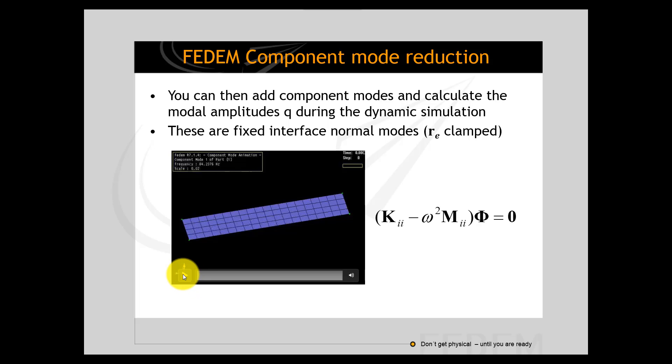But then you can ask FEDEM to calculate a given number of component modes, fixed interface normal modes, and here we can see the first one. You see that the mode shape represents clamped corner nodes or triads and that's why it's called fixed interface normal mode. And this was the first one.